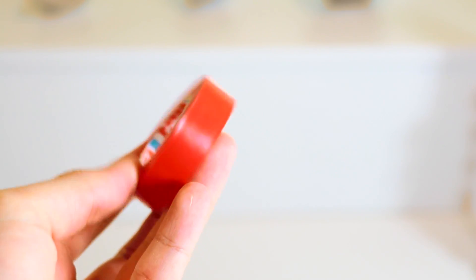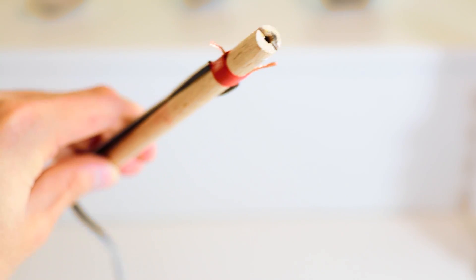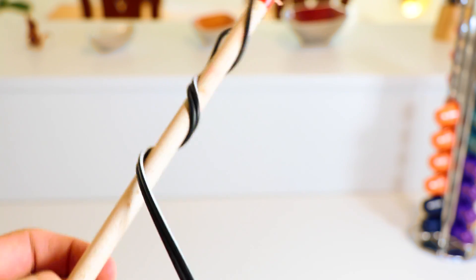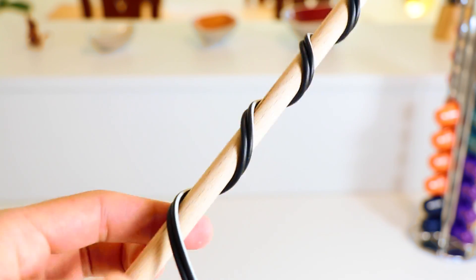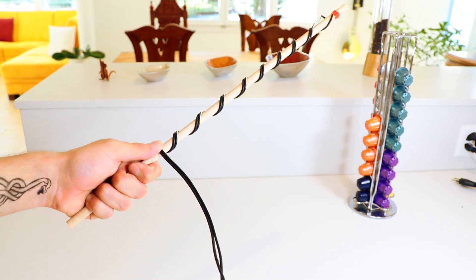Next take a piece of tape and secure the wires like so. Now start wrapping the wire around the wooden dowel by twisting the dowel until you have something like this.